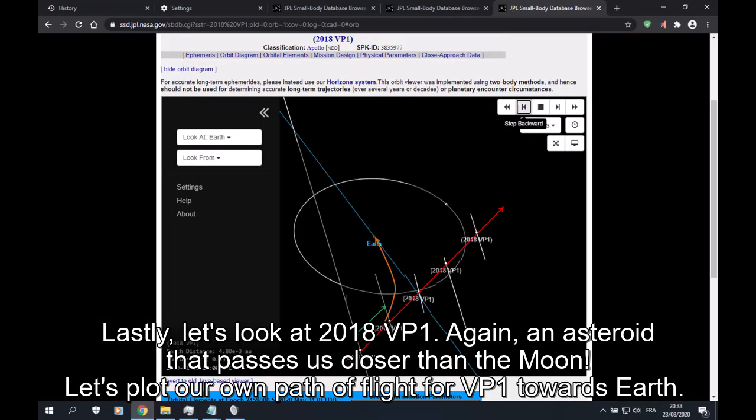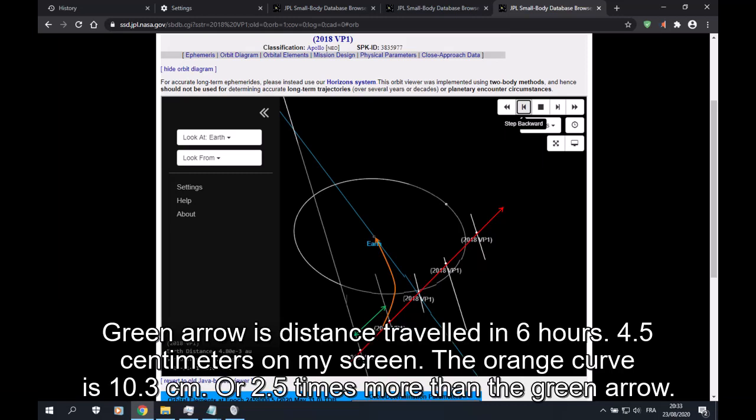Lastly, let's look at 2018 VP1. Again, an asteroid that passes us closer than the moon. Let's plot our own path of flight for VP1 towards Earth. Green arrow is distance traveled in 6 hours, 4.5 centimeters on my screen.